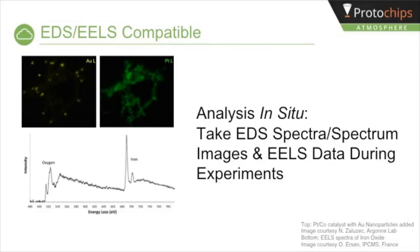In this example, a platinum-cobalt catalyst decorated with gold nanoparticles was mapped using EDS, and the spectrum images of gold and platinum are shown at the top, indicating the locations of each element. A core-loss EEL spectrum of iron oxide, displayed in the bottom figure, clearly shows both the oxygen and iron ionization edges.